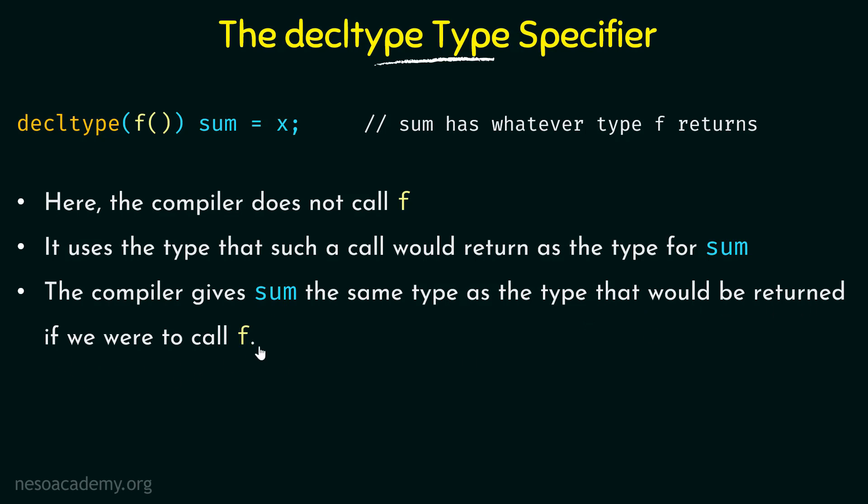Remember that the compiler does not actually call f. It would use the type such a call would return as the type for sum. So it will see if this function was actually called, what would be the type returned, and that would be assigned to sum — but it is not actually calling f.